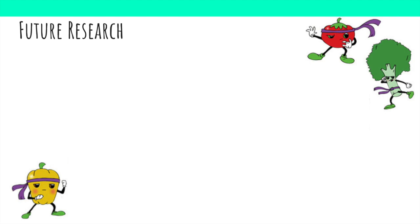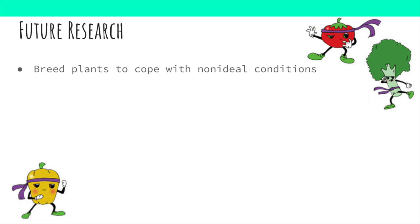Since strigolactones have only been recently discovered, there is still a lot left to explore. Strigolactones play a role in allowing plants to cope with non-ideal conditions such as drought, salt stress, and nutrient deficiencies. Experiments have shown that strigolactone production increases when plants have low levels of nitrogen or phosphorus. Scientists are still working to understand exactly why, but they suspect that strigolactones change the way plants grow and develop so they are better suited to deal with these nutrient deficiencies. These functions can be further explored to help develop crop varieties that produce high yields in many different environments, or to create treatments applied to existing crop varieties.